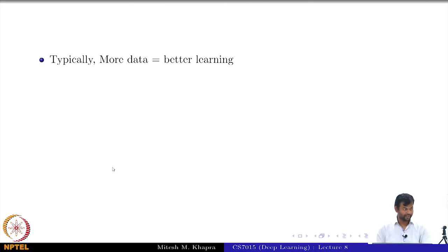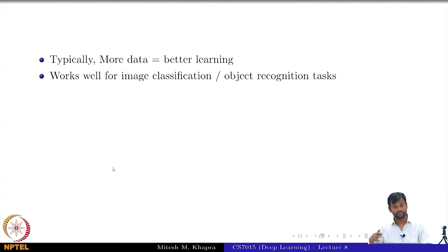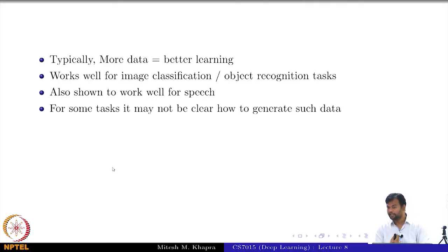Typically, more data equals better learning. Works well for image classification and object recognition tasks. So these are the tasks where this has already been tried out and has shown to work very well. In these tasks, also shown to work well for speech where people have some speech training data and they try to augment it. For some tasks it may not be very easy to generate such data.